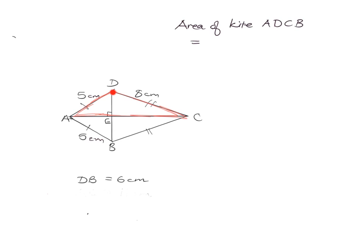We've been told that DB is six centimeters, and we know that in a kite the diagonals cut each other so that this diagonal cuts the other one in half. So this is just going to be half of six, which is three centimeters. We've already got the height, so all we need to do is find what the base AC is. Looking carefully, AC is made up of AE plus EC.